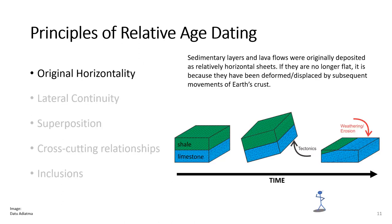The first principle of relative age dating is the principle of original horizontality, which states that sedimentary layers and lava flows were originally deposited horizontally. If they're no longer flat, it means that they were deformed afterwards.